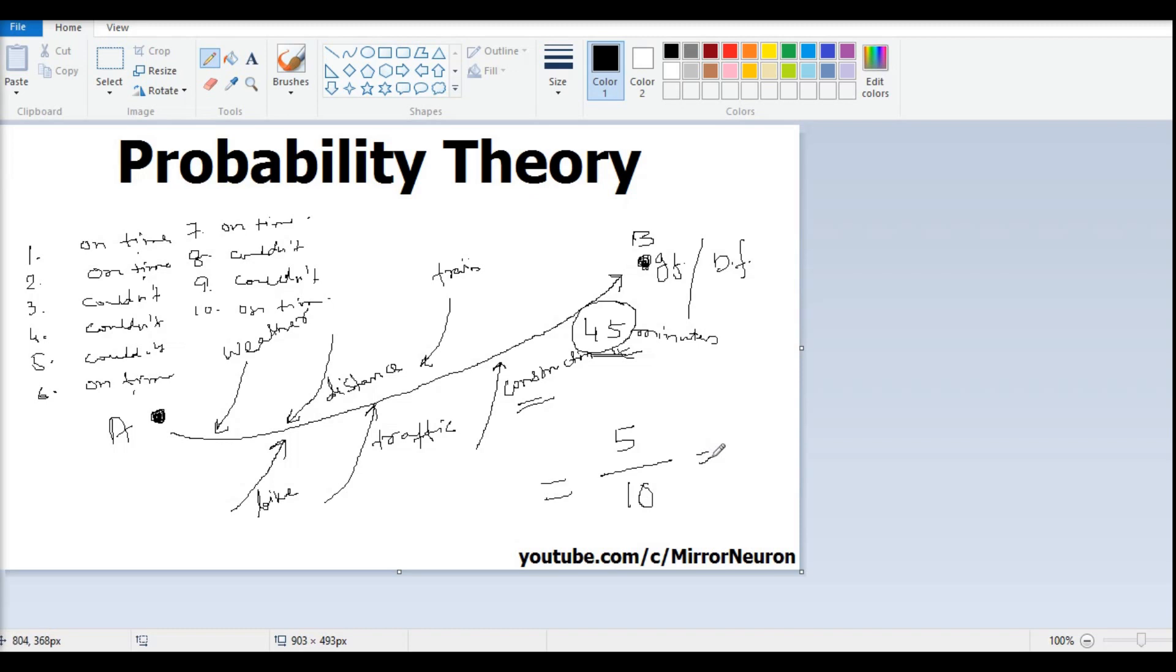So that means your probability of reaching from location A to location B within 45 minutes is 0.5. That means you have a 50 percent chance that you will be able to reach there.